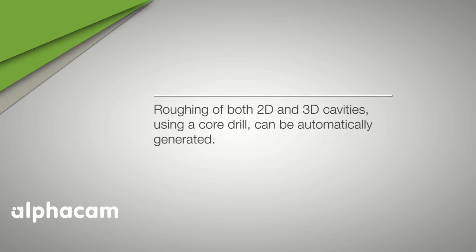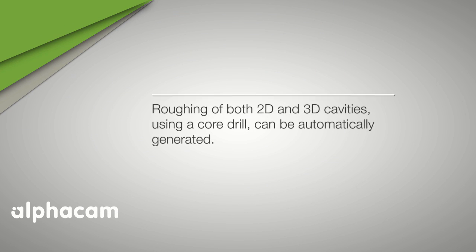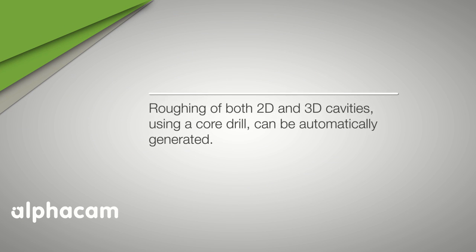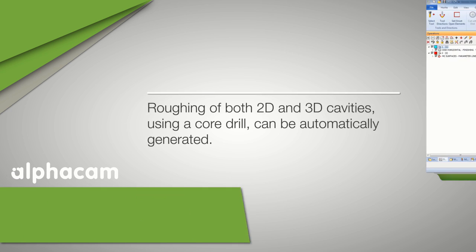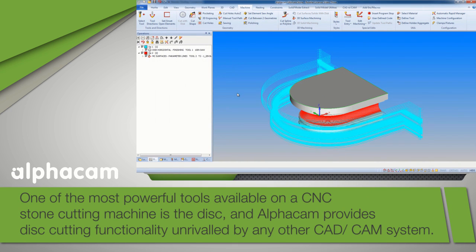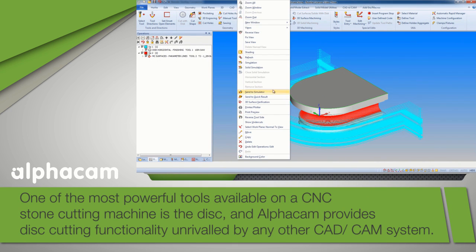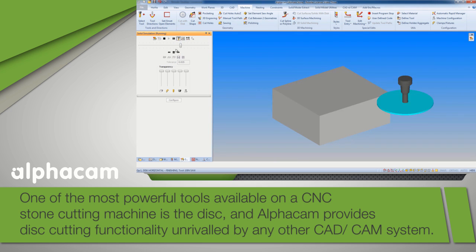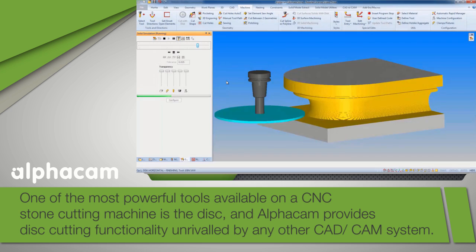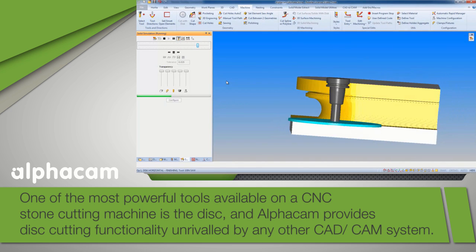Roughing of both 2D and 3D cavities using a core drill can be automatically generated. One of the most powerful tools available on a CNC stone cutting machine is the disc, and AlphaCam provides disc cutting functionality unrivalled by any other CAD CAM system.